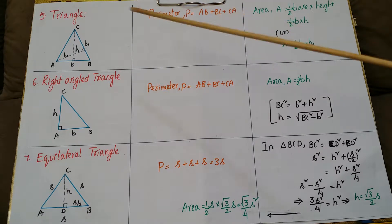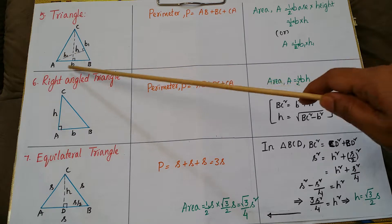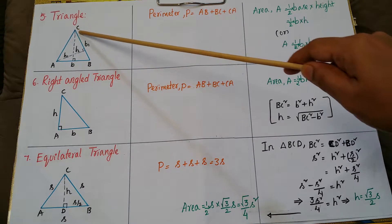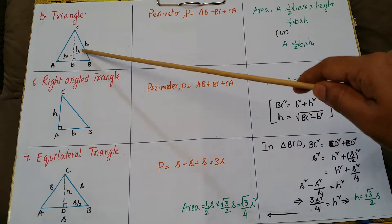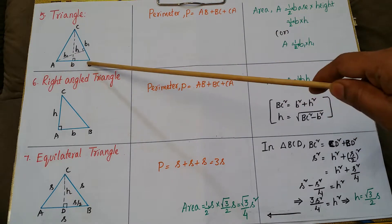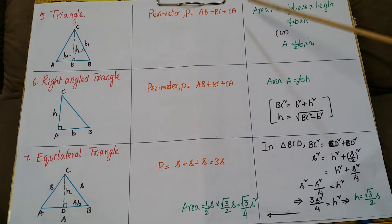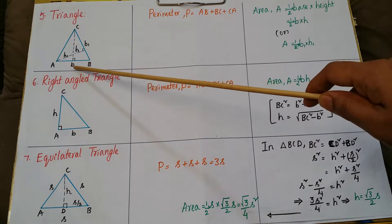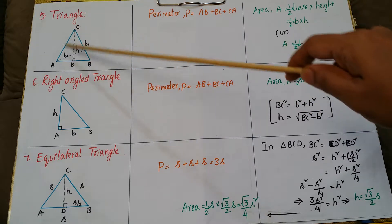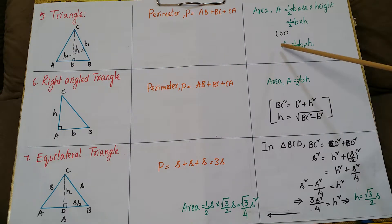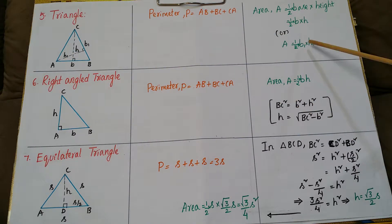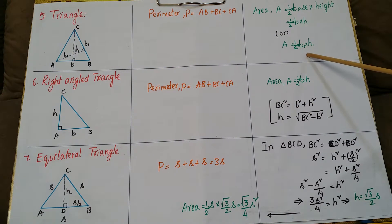These are the formulas for different triangles. For any triangle ABC, if you take base as b and the corresponding altitude as h, and take BC as b1 with corresponding altitude h1, then the perimeter is AB + BC + CA. The area of a triangle is ½ × base × height, so A = ½ × b × h. If you take base as b1, then A = ½ × b1 × h1. Both areas are the same.